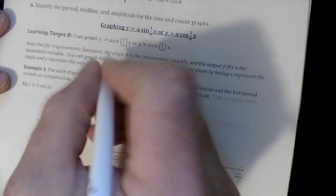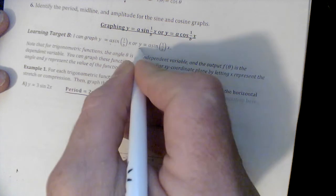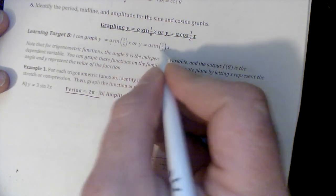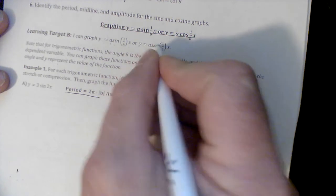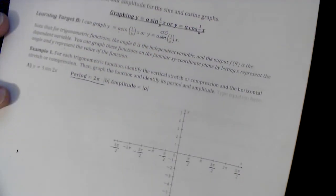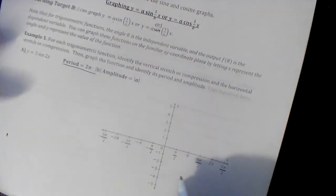We're going to graph y equals a sine of 1 over bx. They should say or cosine - it looks like they messed up without saying cosine here. That's what we're going to do. To do that, I'm going to refer to these notes up here.